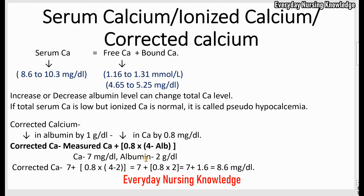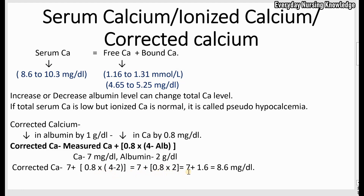For example, if a patient's calcium level is 7 and albumin is 2, both are low. To find the corrected calcium, apply the formula: 7 + 0.8 × (4 − 2) = 7 + 0.8 × 2 = 7 + 1.6 = 8.6. The corrected calcium value is 8.6, which is normal. This shows the low calcium level was due to low albumin — that is pseudo-hypocalcemia. You must calculate the corrected calcium whenever a patient has both low albumin and low serum calcium.